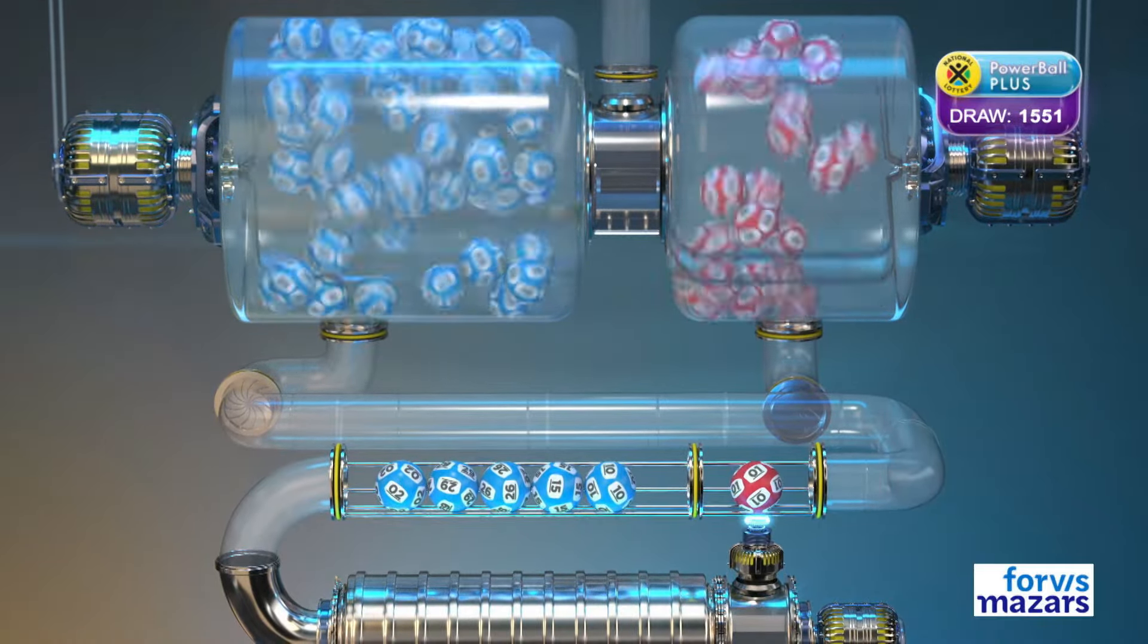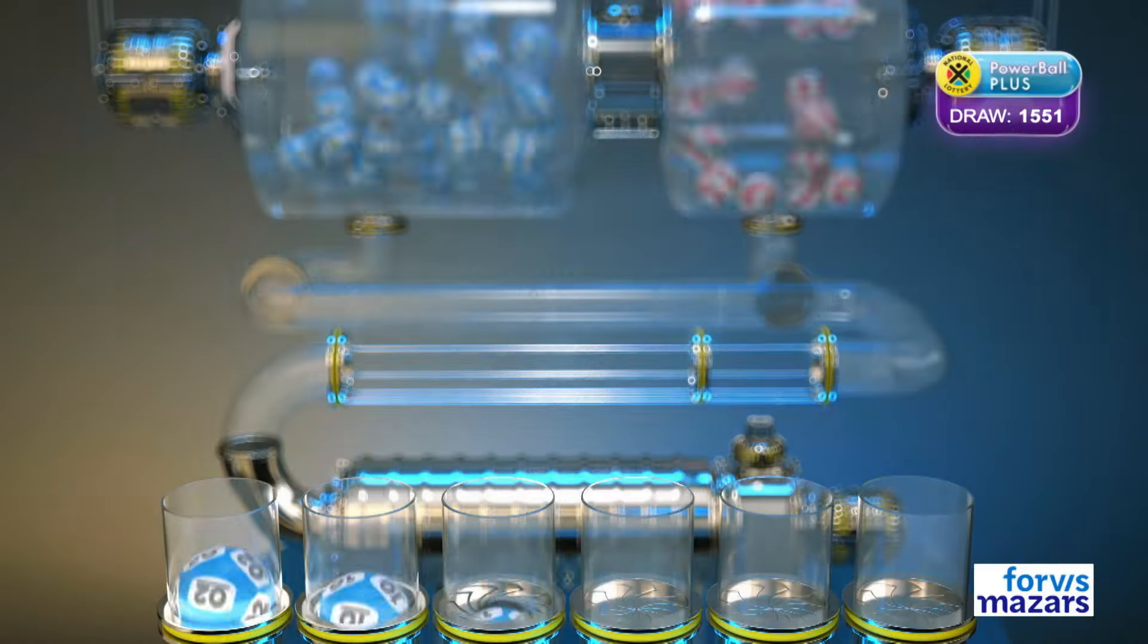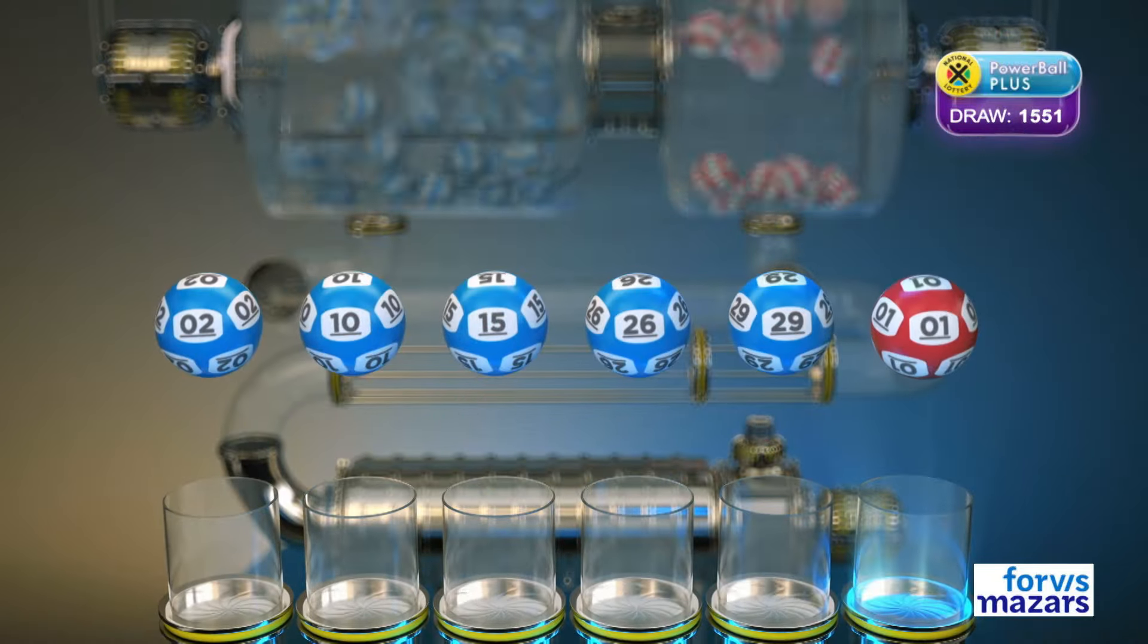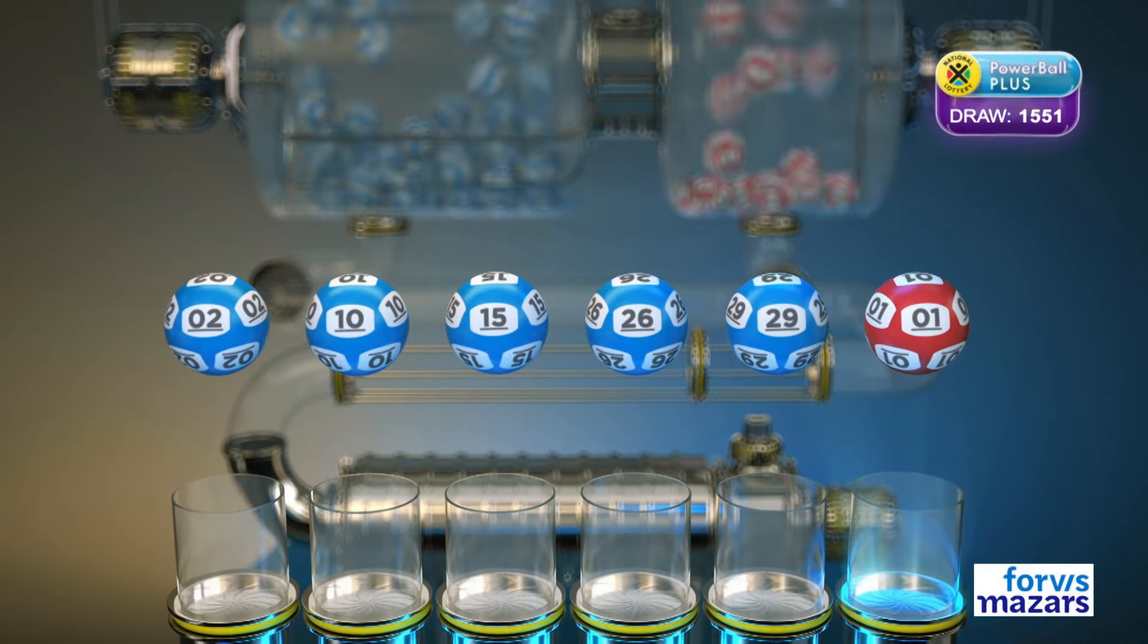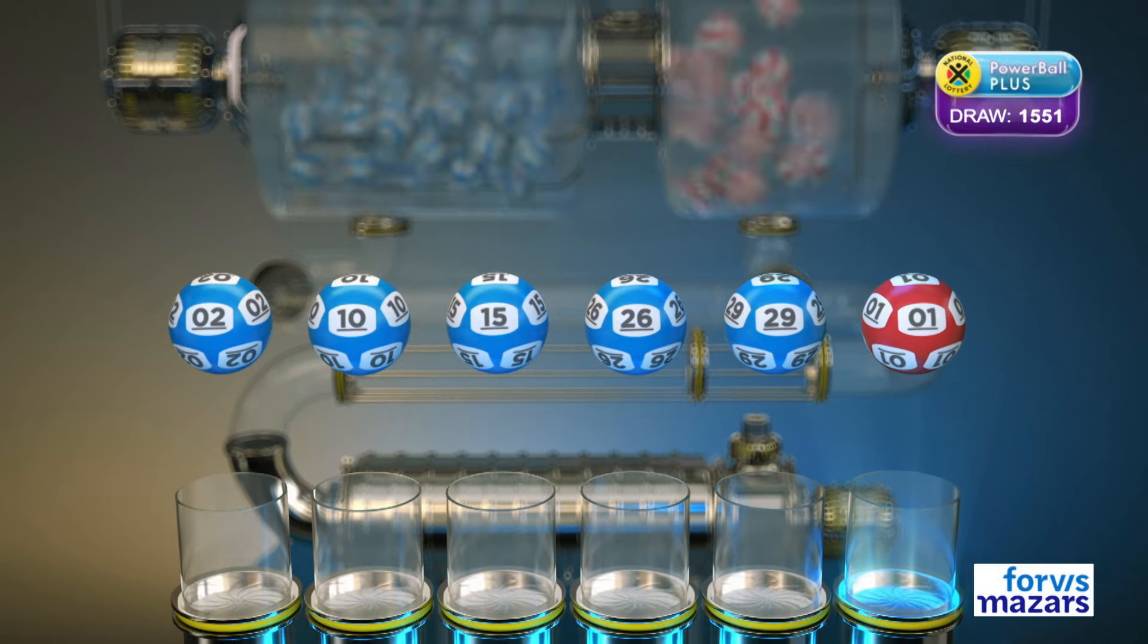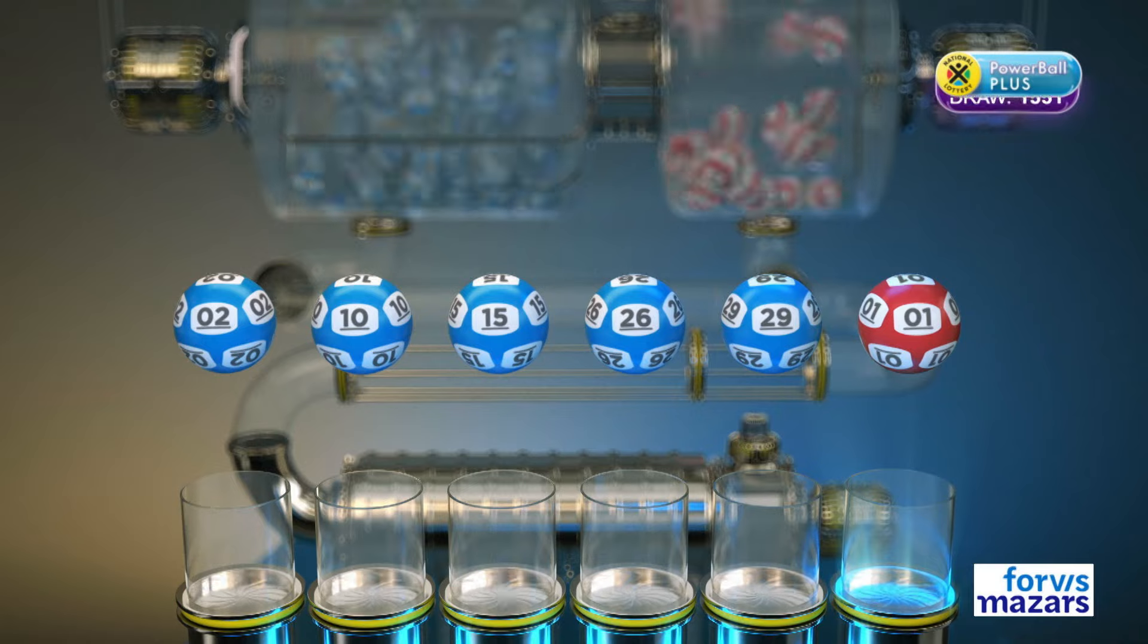And the Powerball is Ten. Let's recap these numbers in numerical order. Two, Ten, Fifteen, Twenty-six, Twenty-nine. And the Powerball is...